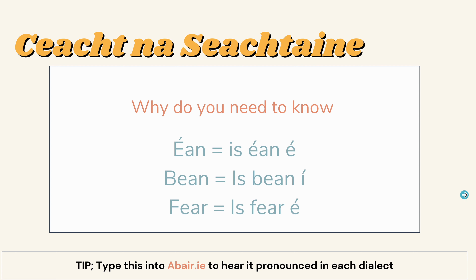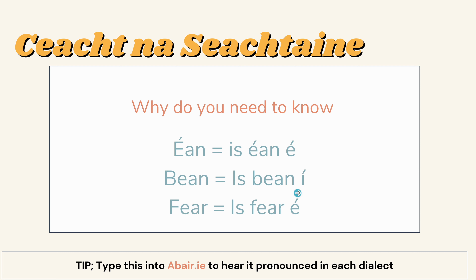Other ways gender matters: because éan is masculine, if you were saying 'it's a bird' in Irish, you would say is éan é. This é here is pronounced like 'a', and this is referring to the bird being masculine — so it's like saying 'he is a bird.' Bean is woman, so is bean í — she's a woman, is bean í. You have í here, pronounced like an 'e'. And then 'he's a man' is is fear é. When referring to nouns in Irish, you need to know if they're feminine or masculine so you can refer to them properly.